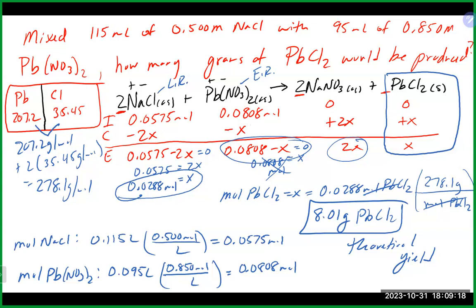Sometimes solution stoichiometry still involves a limiting reagent problem. Whenever you do stoichiometry — whether with grams and moles, molarity and volume, or gases — always ask: can I get to moles of each reactant? If yes, you need to find the limiting reagent.